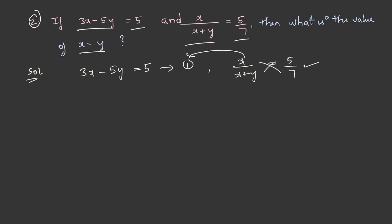For that, we cross multiply: 7x = 5x + 5y. So, 2x - 5y = 0. This will be our second equation.